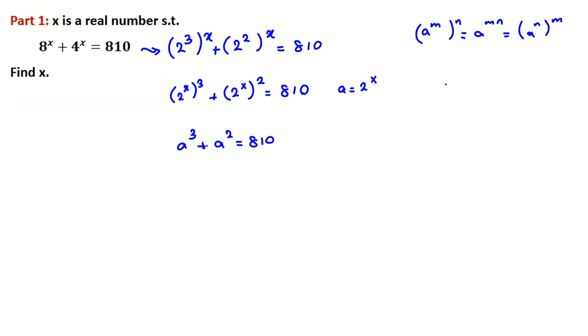So it will be a cubed plus a squared equals 810. Now it is a cubic function. One important idea when the degree is 3.